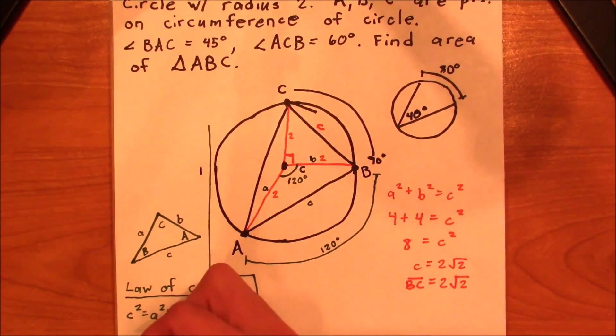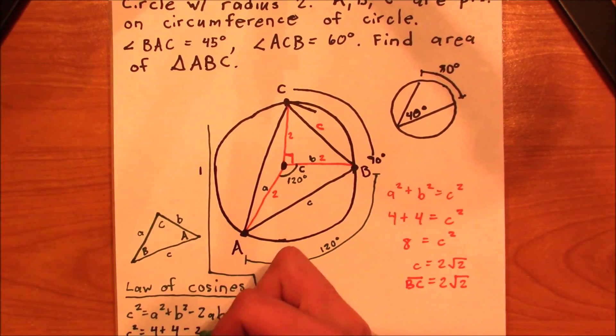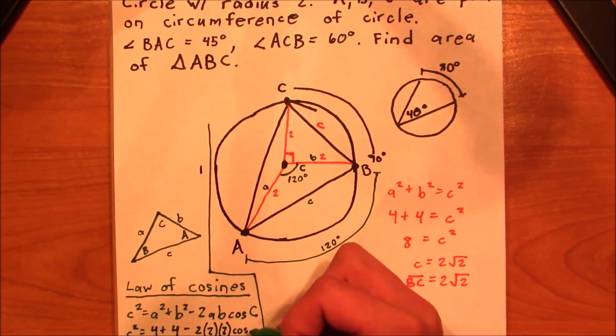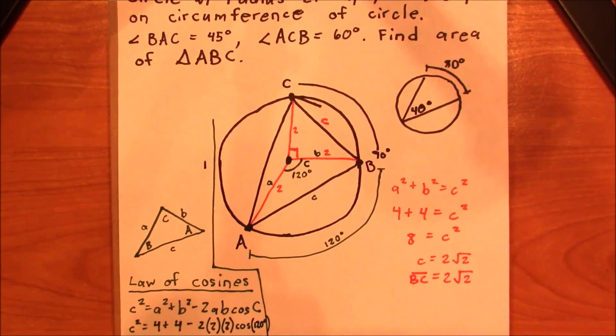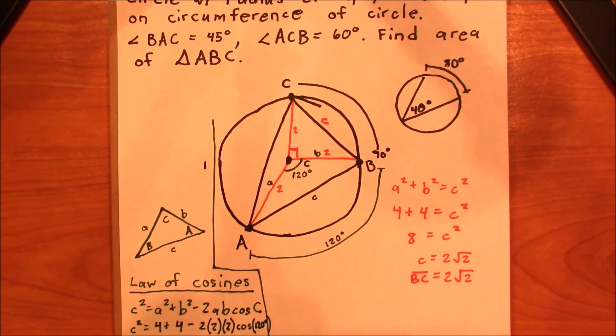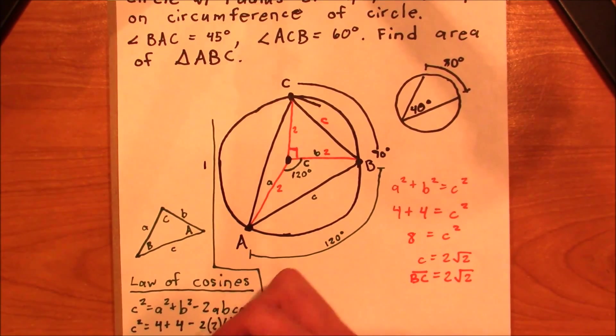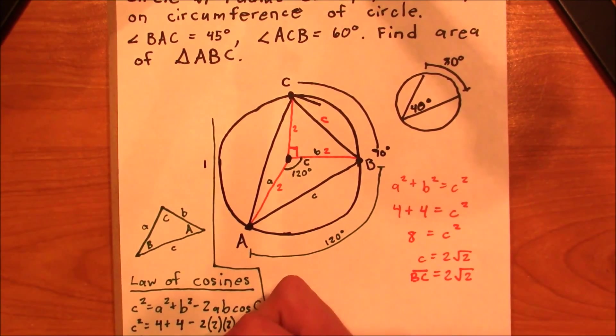Okay. So let's just go ahead and plug all this in. We have c squared equals 4 plus 4 minus 2 times 2 times 2 times the cosine of 120 degrees. Okay. So first of all, let's go ahead and just keep calculating, 8, 8 minus 8 times,